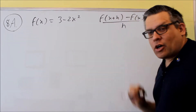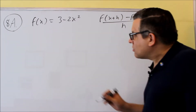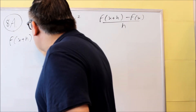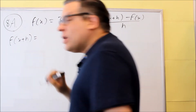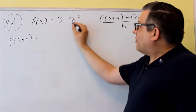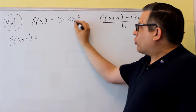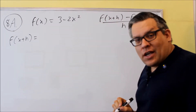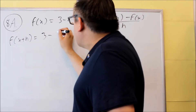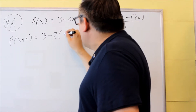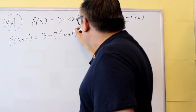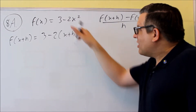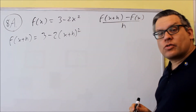But we still have to find out what f of x plus h is, so let's do that part. So f of x plus h means that you're going to take this one, you're going to remove the x and replace it with x plus h. So I have 3 minus 2, and I'm putting in x plus h in place of the x there. That's what it's going to look like.